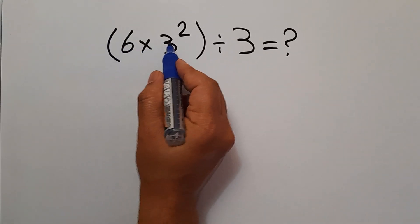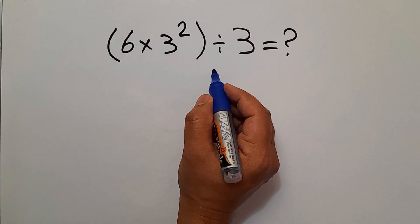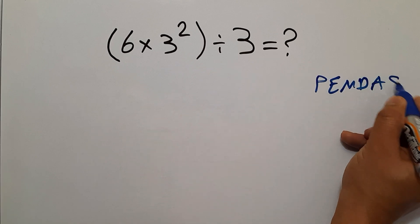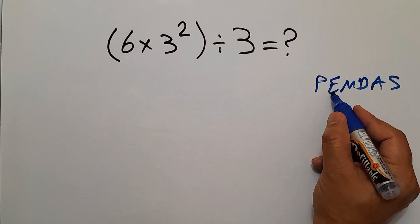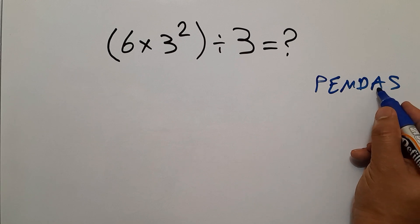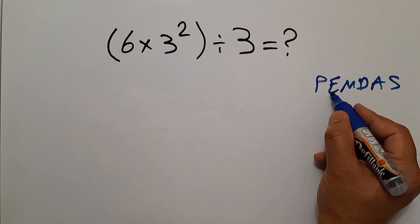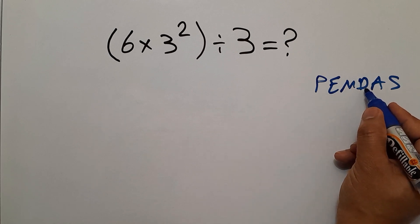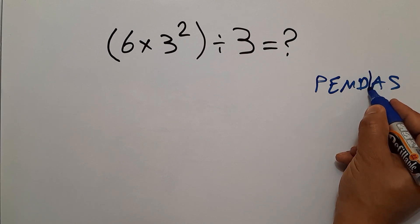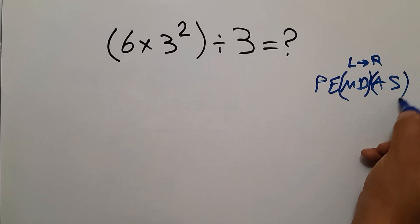Parentheses, 6 times 3 squared, then divided by 3. Are you ready to solve? Let's go ahead and get started. According to the order of operations, which is PEMDAS: P stands for parentheses, E stands for exponents, M and D stands for multiplication and division, and A and S stands for addition and subtraction. We first do parentheses, then exponents, then multiplication and division, and finally addition and subtraction. Remember that multiplication and division have equal priority and we work from left to right. The same applies to addition and subtraction.